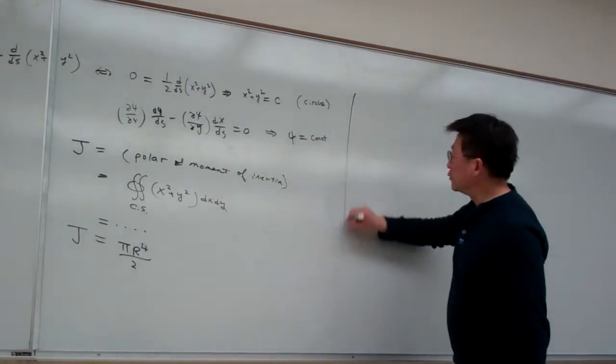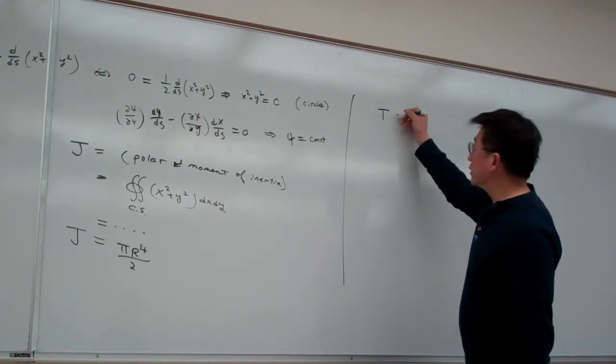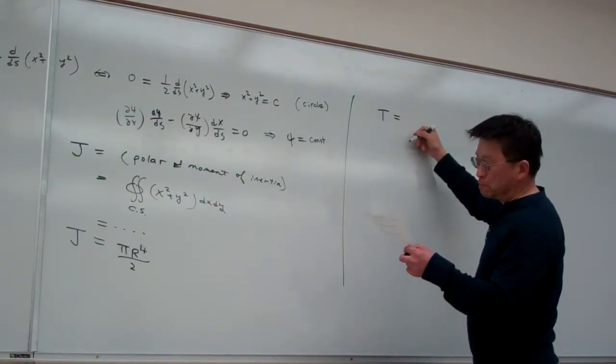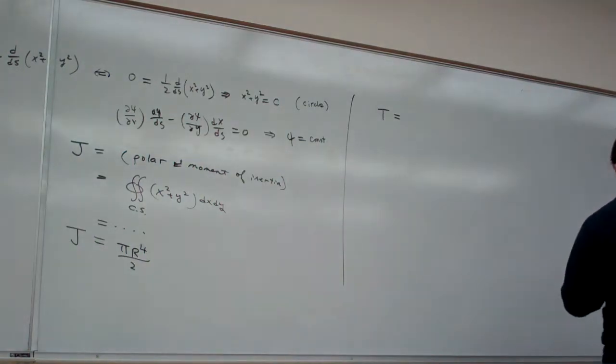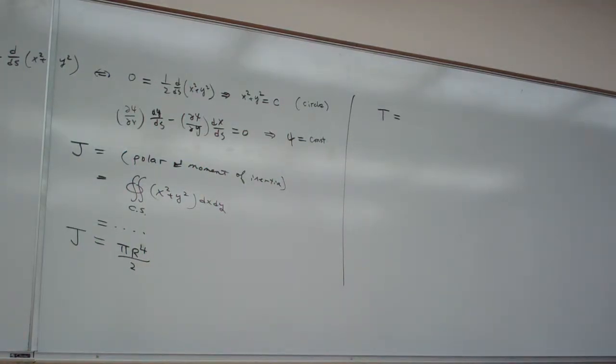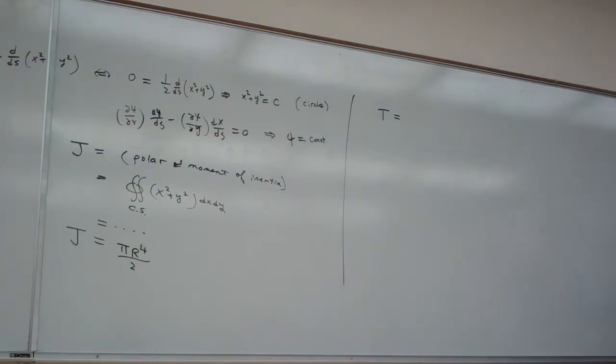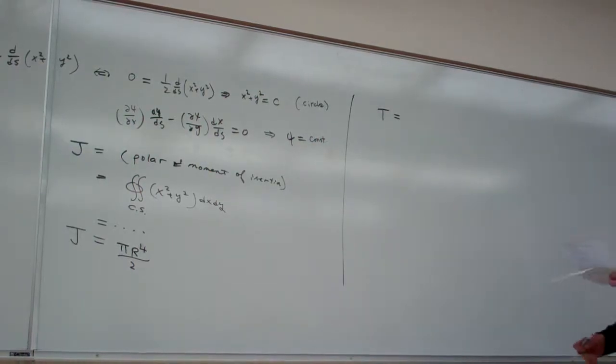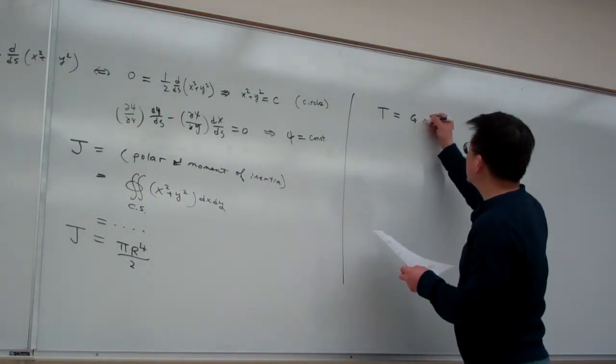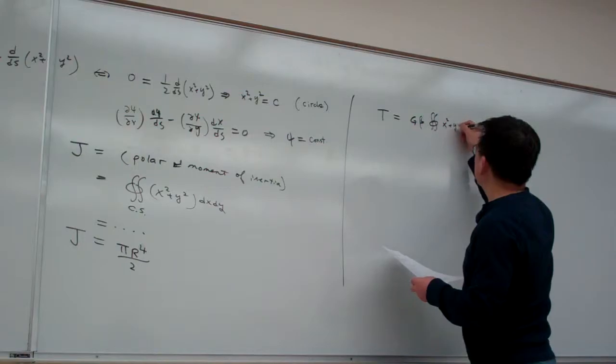Then again, back to our formula, we have such equilibrium. T equals G times beta, and we have this formula here.